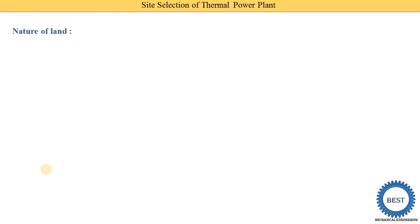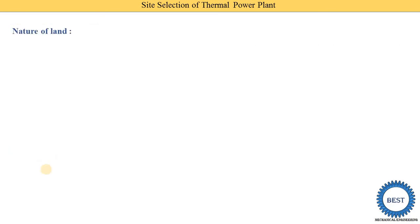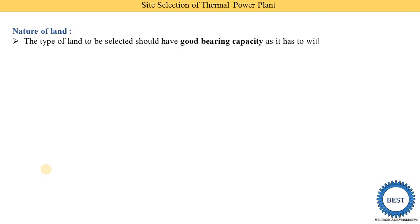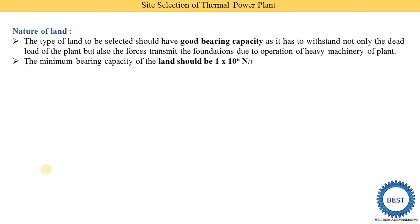Next point is the nature of land. The type of land selected should have good bearing capacity, as it has to withstand not only the dead load of the plant but also the forces transmitted to the foundations due to the operation of heavy machinery — meaning the land shall be able to sustain dynamic forces. The minimum bearing capacity of the land shall be 1×10⁶ Newton per meter square.